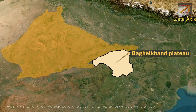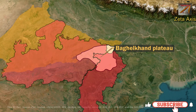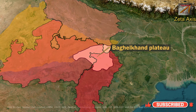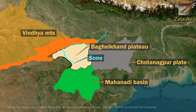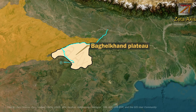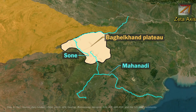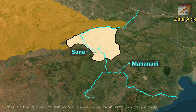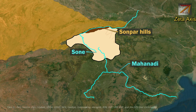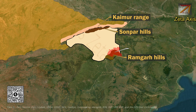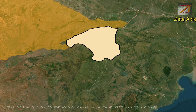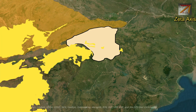The Baghelkhand Plateau is located in northern Chhattisgarh, eastern Madhya Pradesh, and southeastern Uttar Pradesh. It is bounded by the Son River and Vindhya Mountains in the north, Chhattisgarh Plains or Mahanadi Basin in the south, Chhota Nagpur Plateau in the east, and Maikal Range in the west. The Baghelkhand Plateau forms a water divide between the Mahanadi and Son River — the northern region is drained by tributaries of the Son River and the southern region by tributaries of the Mahanadi. The Son Par Hills are located in the northern part, lying south of the Son River and parallel to the Kaimur Range. In the southern part, we see the Ramgarh Hills in Surguja district of Chhattisgarh. The eastern part is made of sandstone and limestone, while the western part is made of granite.